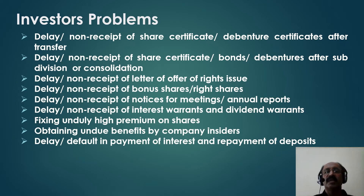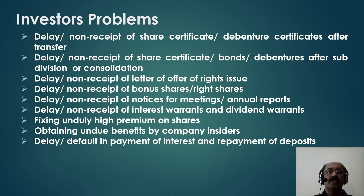Further grievances include: delay or non-receipt of share or debenture certificates after transfer; delay or non-receipt after subdivision or consolidation; delay or non-receipt of the letter of offer for rights issues, especially after IPO; delay or non-receipt of bonus shares or rights shares; delay in notices for meetings and annual reports; delay in interest warrants and dividend warrants; fixing unduly high premium on shares; obtaining undue benefits by company insiders who may sell off shares without the knowledge of other investors; and delay or default in payment of interest and repayment of deposits in bonds or debentures.